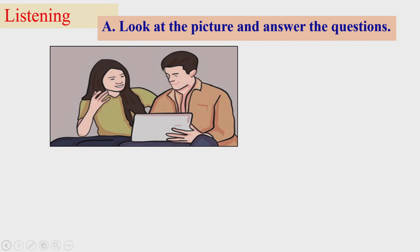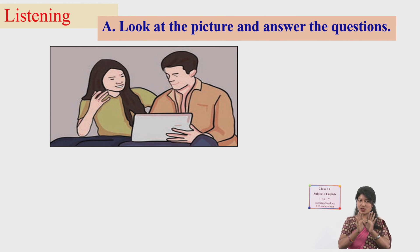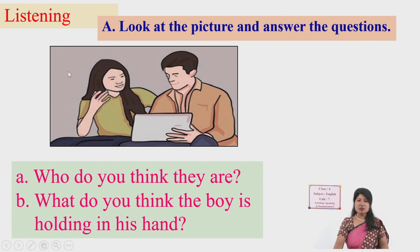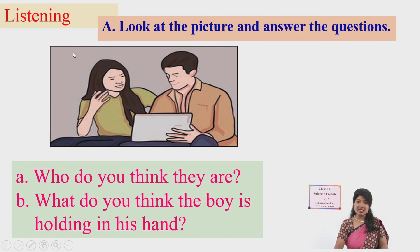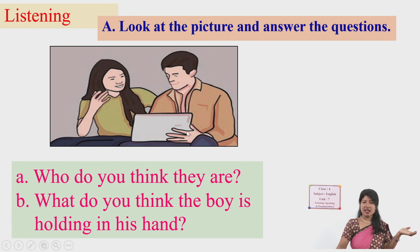Look at the picture and answer the questions. First of all, look at this picture very carefully — absorb what you see. Here we have two questions. We can see two people — a man and a lady. There is something in the man's hand.